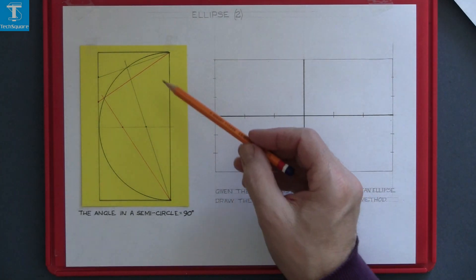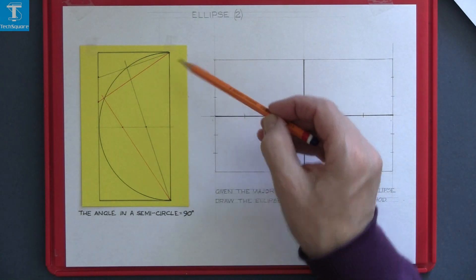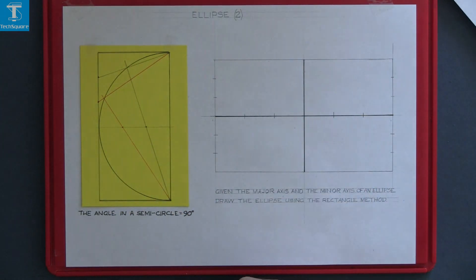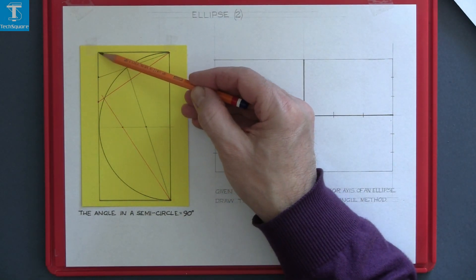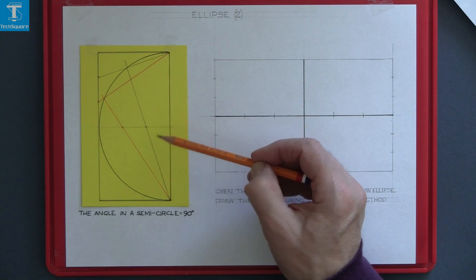What I've done here is I've drawn a semicircle with a compass and I've constructed a rectangle about that semicircle. I've divided this section of the rectangle into three equal parts and I've divided this center line into three equal parts.